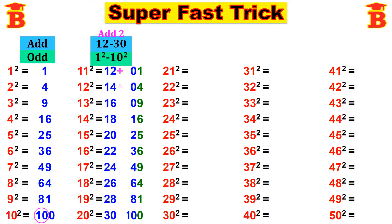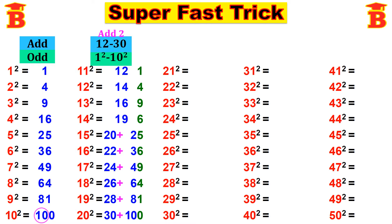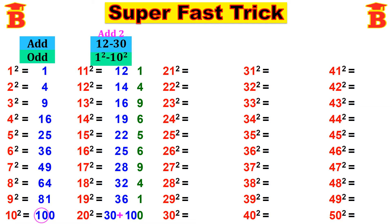Now add the tens place. 12 plus 0 gives 12. 14 plus 0 gives 14. 16 plus 0 gives 16. 18 plus 1 gives 19. 20 plus 2 gives 22. 22 plus 3 gives 25. 24 plus 4 gives 28. 26 plus 6 gives 32. 28 plus 8 gives 36. 30 plus 10 gives 40.